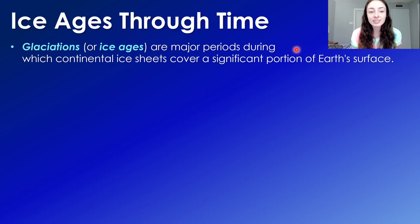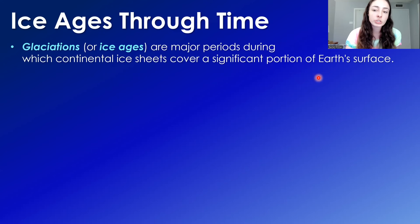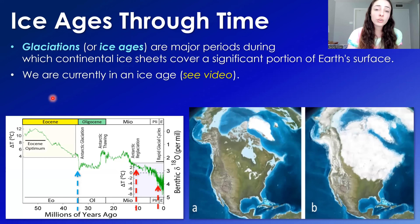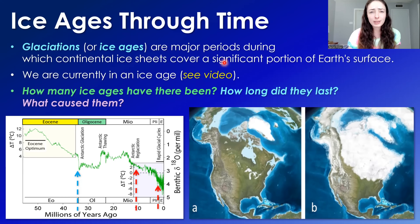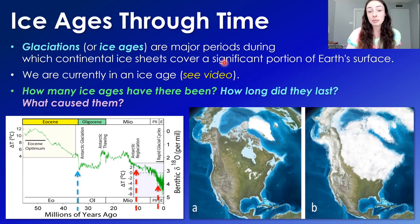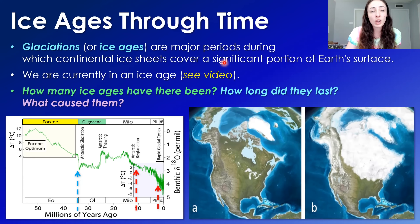Global glaciations, or ice ages, are major periods during which continental ice sheets cover a significant portion of Earth's surface. We are currently in an ice age — I talk about this in my modern ice age video. But how many ice ages have there been throughout Earth's history? How long did they last, and what caused them?